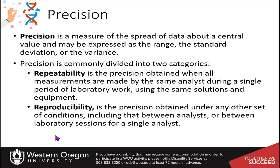Regarding precision: it is a measure of the spread of data around a central value, expressed as the range, standard deviation, or variance. Precision is divided into repeatability and reproducibility. Repeatability is the precision obtained when all measurements are made by the same analyst during a single lab period, using the same solutions and equipment — your ability to repeat the experiment under the same conditions.